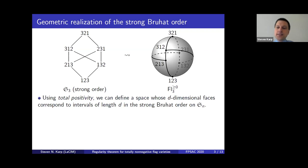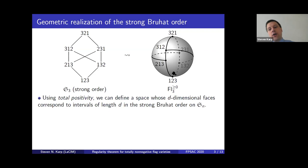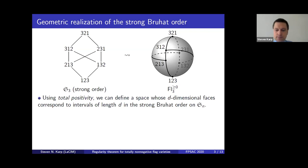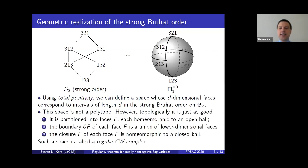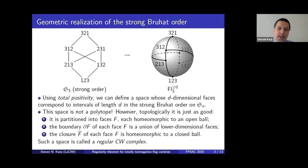This geometric realization is even nicer than what I was asking for. Not only do the vertices and edges correspond to vertices and edges in the Hasse diagram, but all the d-dimensional faces in our space correspond to the intervals of length d in the poset. We could also ask: what kind of space is this topologically? As depicted here, it's definitely not a polytope, and in fact there's no way to turn it into a polytope while maintaining the combinatorics.